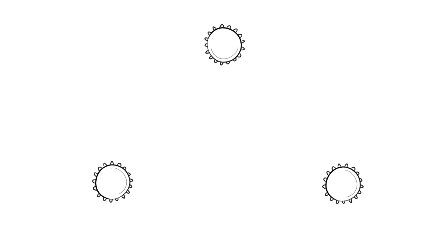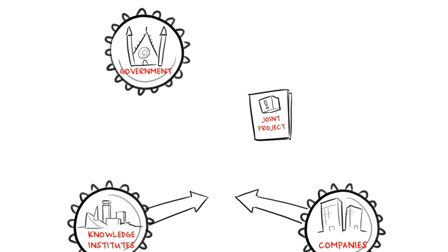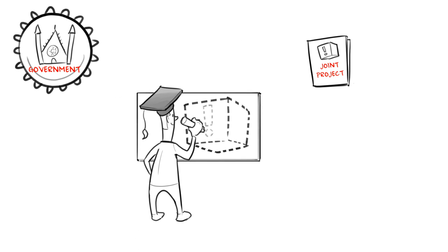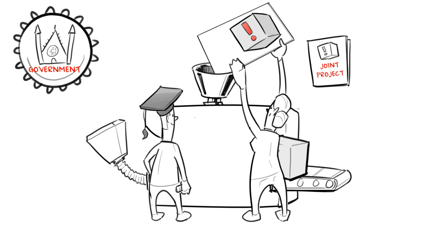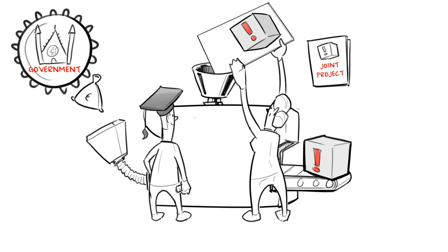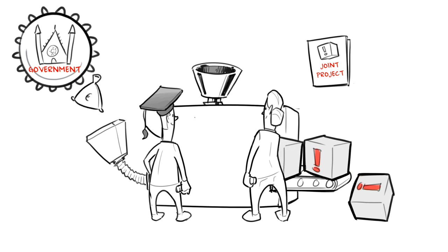In the time before what is generally called the financial crisis, companies and knowledge institutes would frequently form joint projects. Researchers would develop new technologies and companies brought that to market in the form of new products or services. In those times, the government would provide much of the funding up front. This worked quite well for all parties.